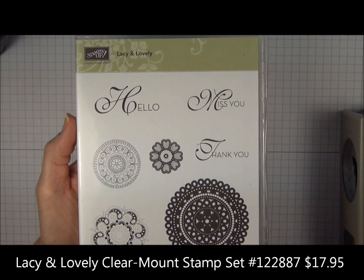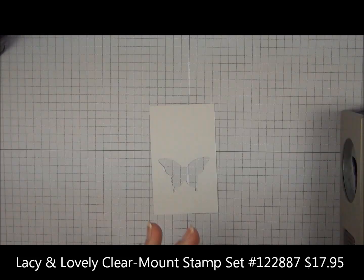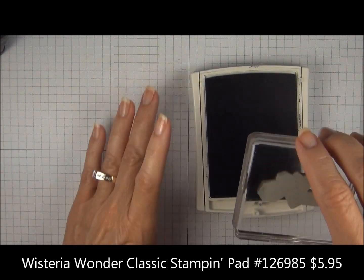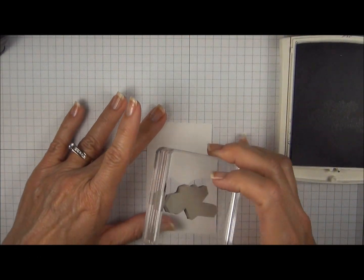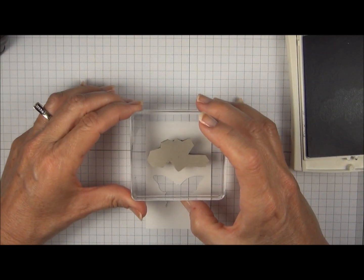I'm going to use a stamp set called Lacey and Lovely and we're going to use Wisteria Wonder ink. I'm going to tap tap on the ink pad and center this right above the butterfly.